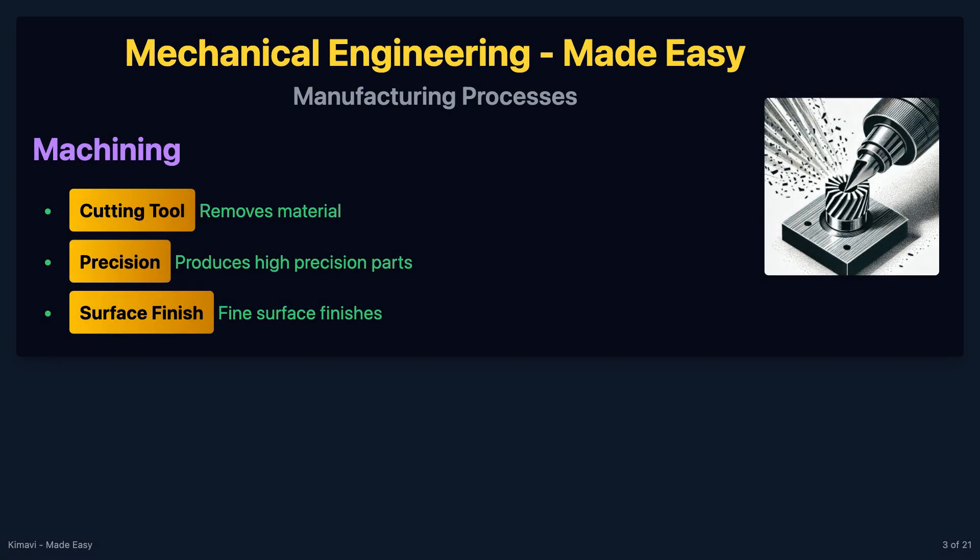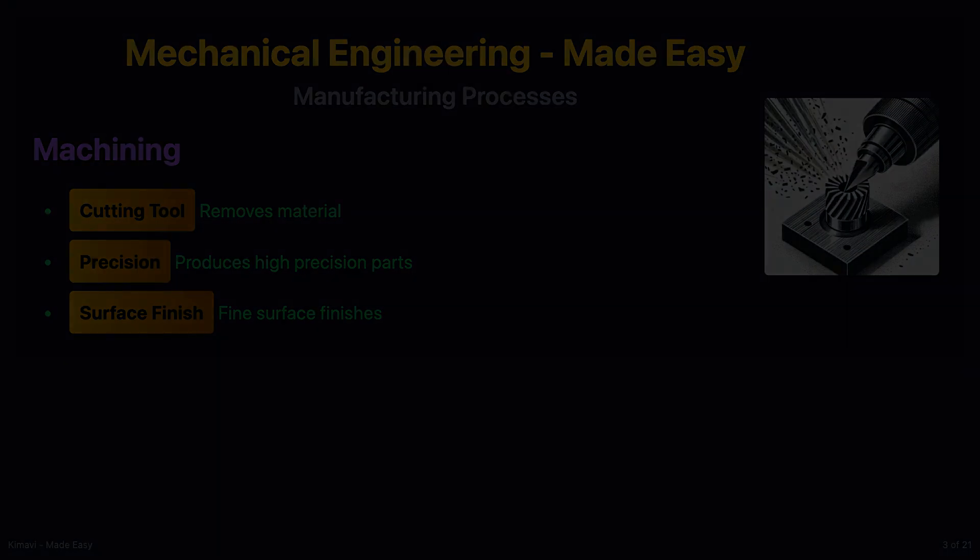Machining is a manufacturing process where a cutting tool removes material from a workpiece to shape it into the desired form. This process is widely used for producing parts with high precision and fine surface finishes.